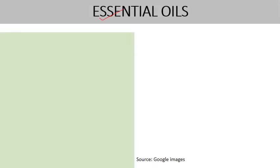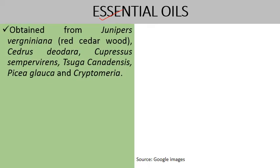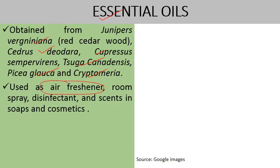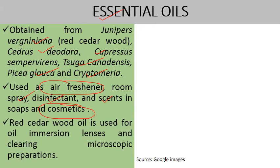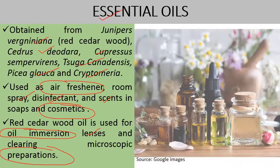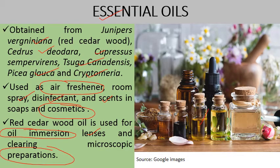Next come essential oils, which are volatile oils produced by gymnosperms. These are obtained from Juniperus virginiana (commonly known as red cedarwood), Cedrus deodara, Cupressus sempervirens, Tsuga canadensis, Picea glauca, and Cryptomeria. These essential oils are used as air fresheners, room sprays, and for manufacturing disinfectants and scents in soaps and cosmetics. Red cedarwood oil is also used for oil-emulsion immersion lenses and clearing microscopic preparations.